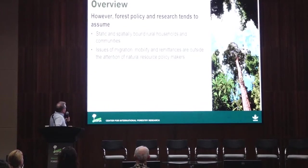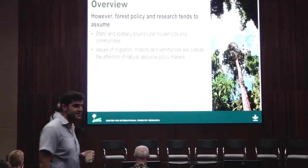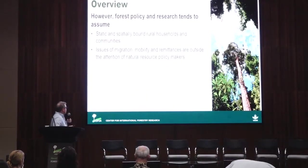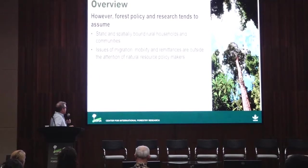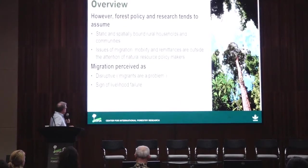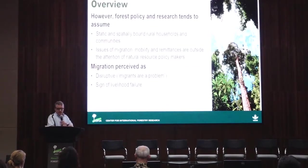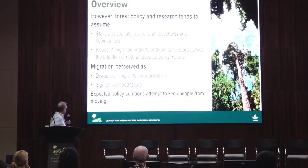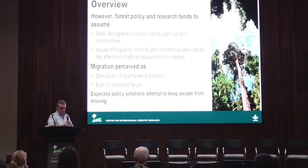Forest policy research and trends tend to assume that households and communities are static and spatially bound. Issues of migration, mobility, and remittances are seen as outside the attention of natural resource policymakers — treated as externalities or complications. Migration is perceived either as disruptive, that migrants are the problem, or as a sign of livelihoods failure. So migration is dealt with simply as a strategy adopted by people that are failing wherever they had been, and expected policy solutions attempt to keep people from moving rather than understanding why it's taking place.